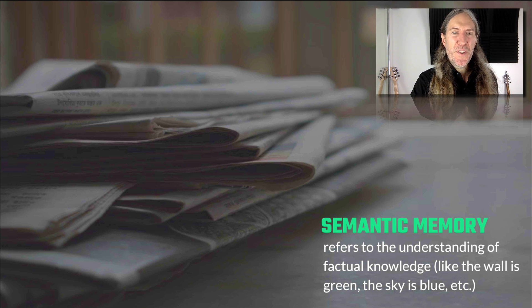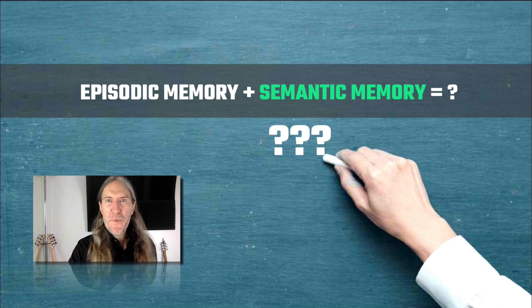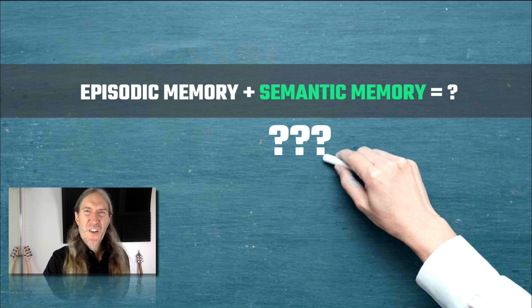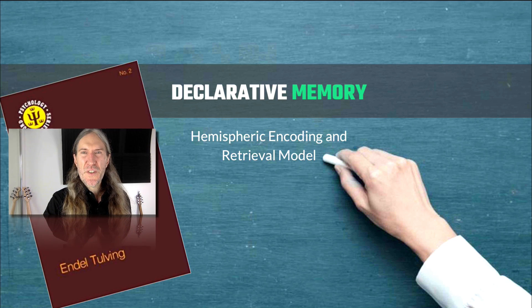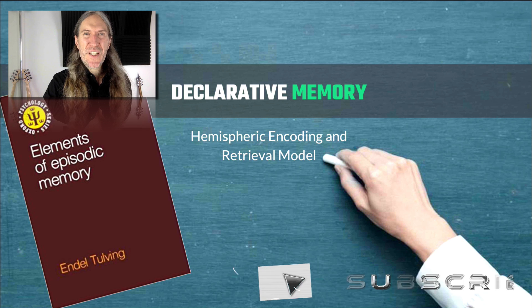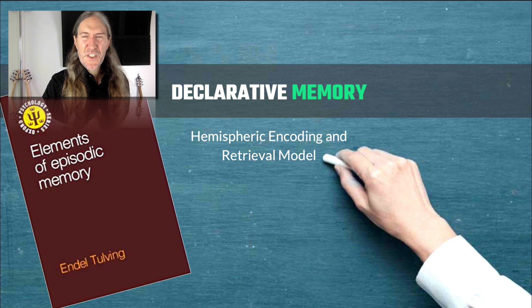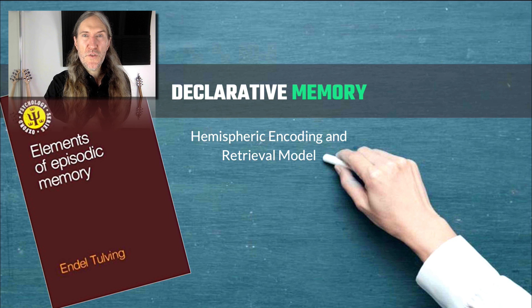When we think about episodic memory plus semantic memory, we get something very interesting, which is still not quite episodic memory — it's something called declarative memory. If you want to get into the real nuts and bolts of it and the science, you can follow up some of the discussion on the Magnetic Memory Method podcast and the blog, which you can learn more about by following the link below.